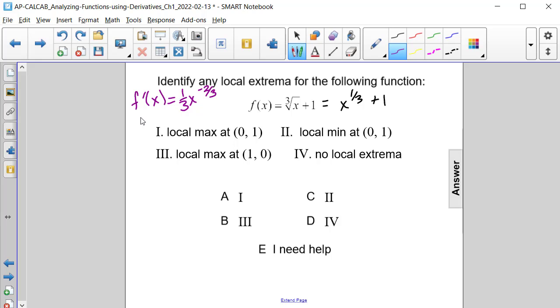If we were to rewrite this, it would be f prime of x is equal to 1 divided by 3 times x to the 2/3rds power in the denominator.